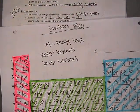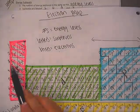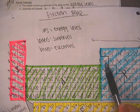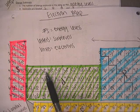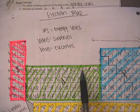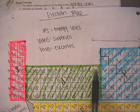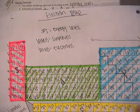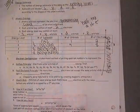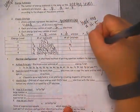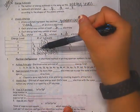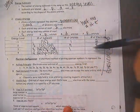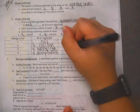For energy level 3, counting anything with a big number 3 — that's 3S, 3P, and 3D — gives us 2 plus 6 plus 10, which is 18 electrons. So in energy level 3 I have 18 electrons. What is half of 18? Nine orbitals.